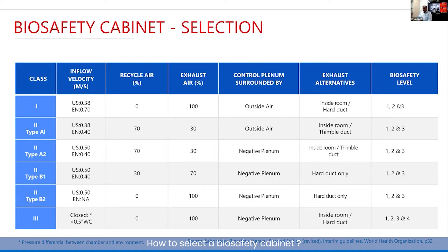What is more popular is Class 2 Type A2, Type B1, and Type B2, where you have 70 percent recycled for A2, 30 percent for B1, and 0 percent for B2. In all these cases there is a negative plenum around, so if there is any breach or contaminant it gets pulled out. For A2 the exhaust air stays inside the room after HEPA filtration, but for B1 and B2 it must be exhausted outside the room via an external exhaust system.